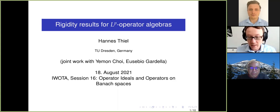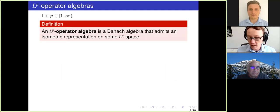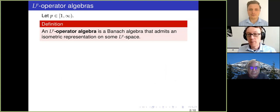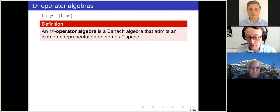Let me start by introducing the objects that we want to study. I would pick a Hölder exponent p, somewhere between one and infinity — usually it's not two. We say that an LP operator algebra is a Banach algebra that admits an isometric representation as operators on some LP space. This is, of course, meant to generalize the notion of C-star algebras, which are Banach algebras admitting isometric representations on Hilbert spaces.